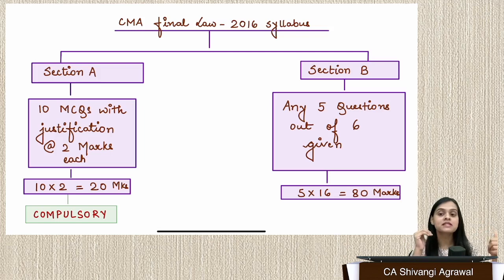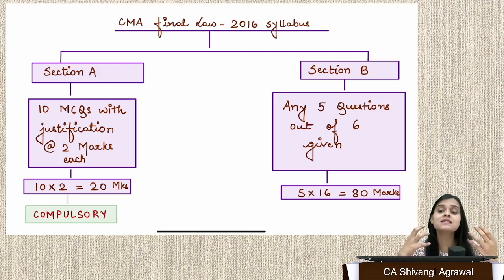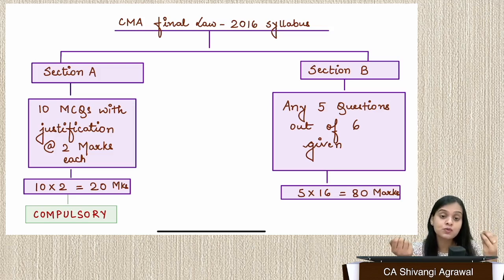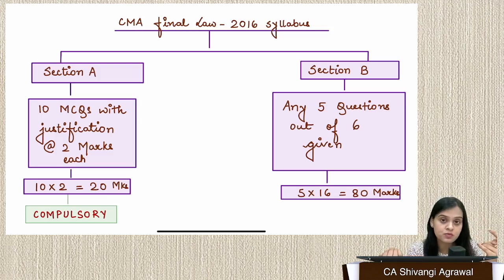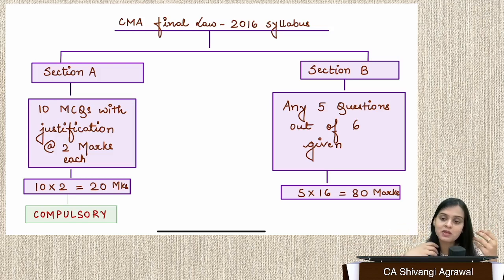When we talk about 2016 syllabus, we have two sections. Section A is undoubtedly 10 MCQs of two marks each, and you also have to write one line of justification — one sentence, not a very elaborate one but a quick one. For preparation, we have our MCQ series which are ongoing. You must practice a lot of MCQs because MCQs ask details inside the chapter — if you just read the entire content prima facie, you'll never be able to get those MCQs.